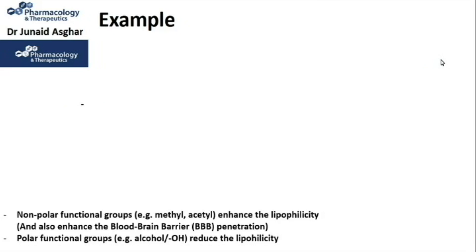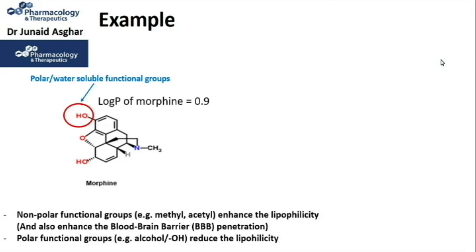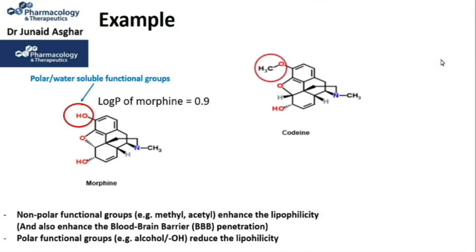Morphine has a hydroxyl group, which is more polar in nature, and has a log P value of 0.9. Only highly lipid-soluble drugs can cross the highly selective blood-brain barrier. Addition of a non-polar group — one methyl group — to morphine produces codeine, which has a higher blood-brain barrier penetration than morphine.